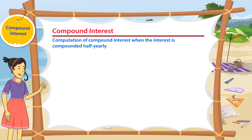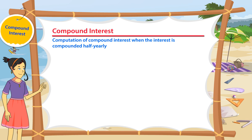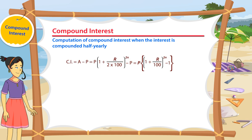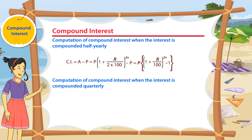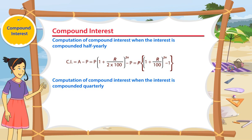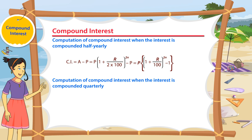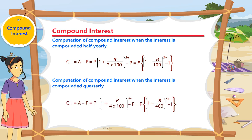The formula for calculating compound interest when the interest is compounded half-yearly is as follows. For computation of compound interest when the interest is compounded quarterly, the formula is as follows.